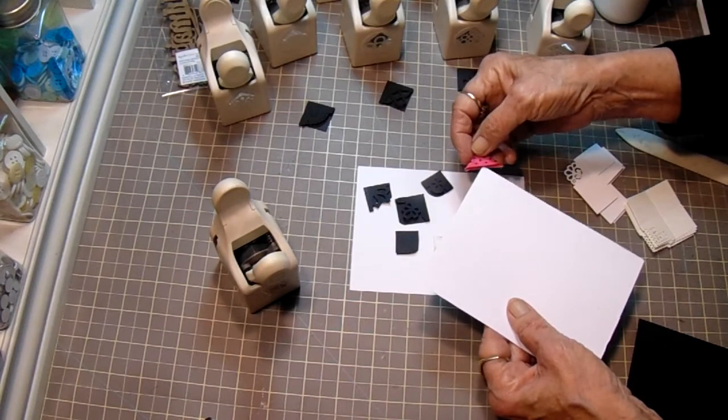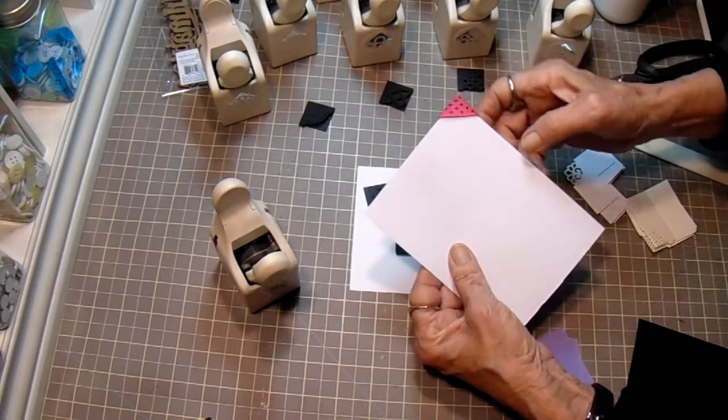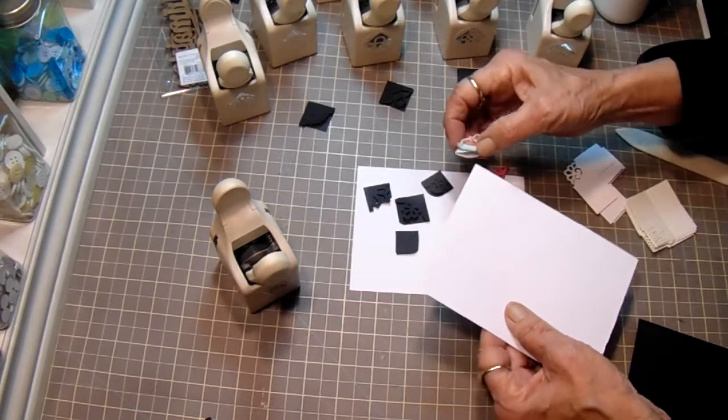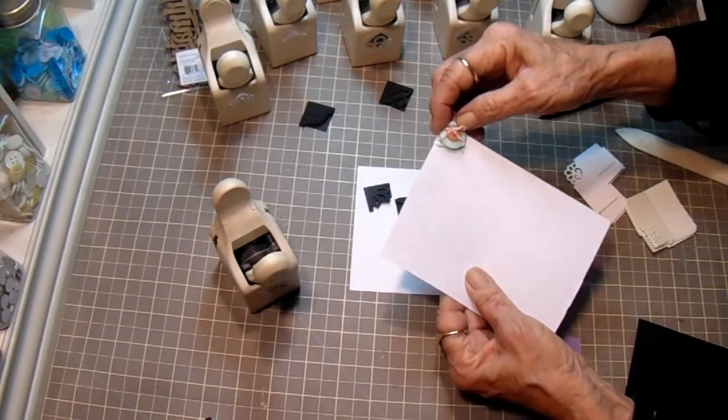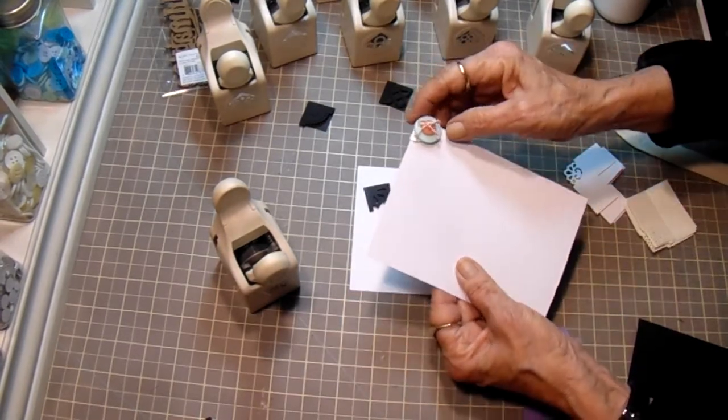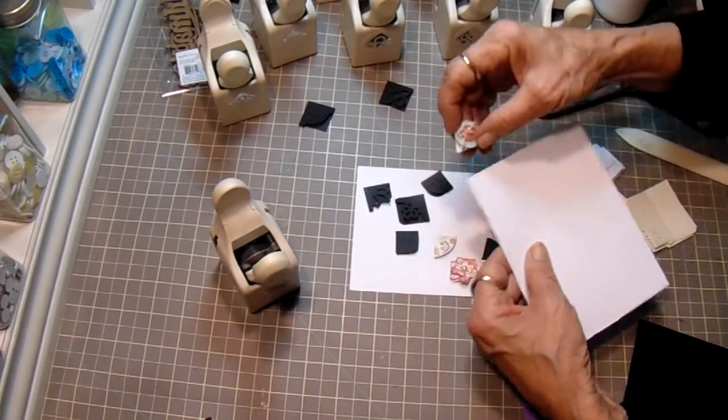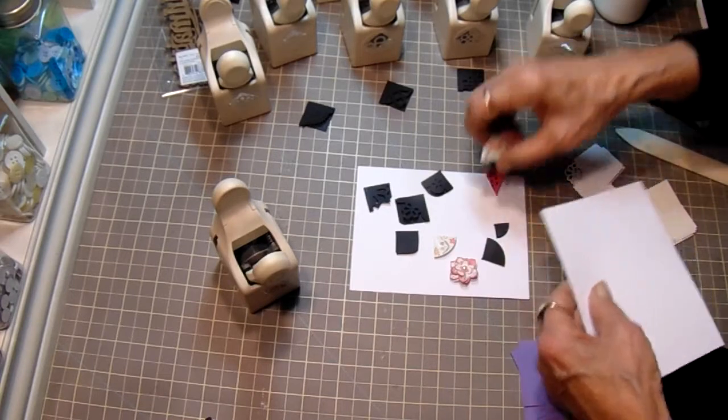This one I wrapped with a ribbon. This one I added a button, a bow, and a little pearl. That would be cute in a baby book. If you had them on all four corners, I just made one of each so that you could see.